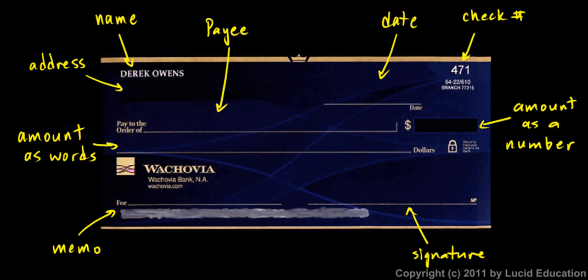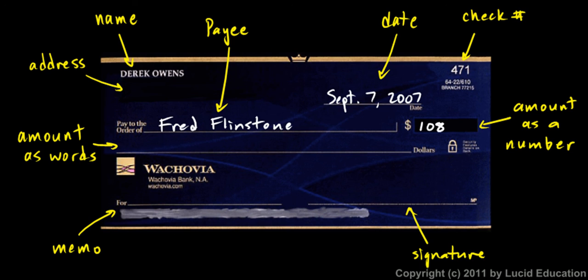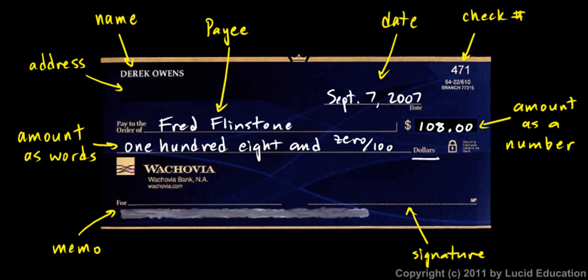So let's actually write a check right now. Let's put the date on here — today is September 7th, 2007. And we'll pay to the order of Fred Flintstone. We're going to write a check to Fred Flintstone for $108. I'll put 108.00. And then on the line below, I write 108.00 — and 'dollars' is already written for me right there. Then we'll write what this is for — this might be for a new car; I'm giving some money to Fred to help him buy a new car. And then I sign my name right down here. And that's how a check is written.